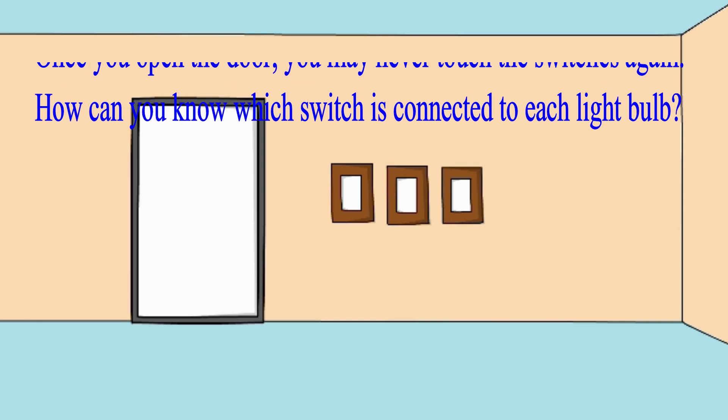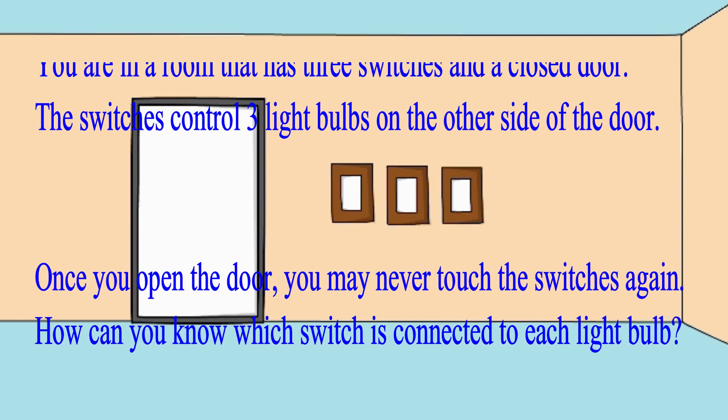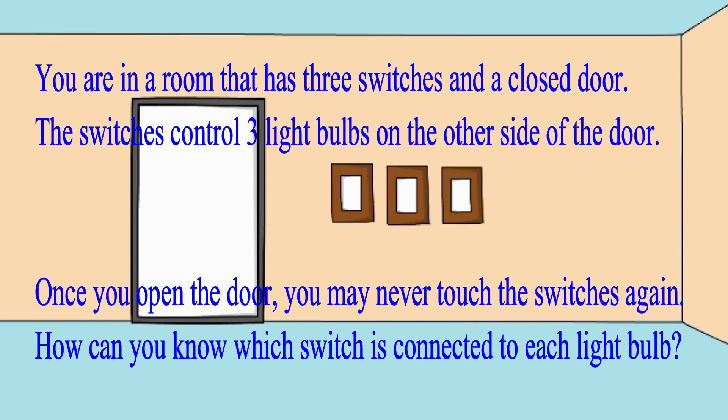You are in a room that has three switches and a closed door. The switches control three light bulbs on the other side of the door. Once you open the door, you may never touch the switches again. How can you definitively tell which switch is connected to each of the light bulbs?